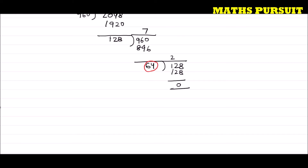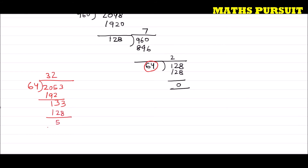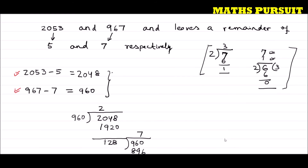We got the largest number as 64. Let us verify whether this is correct. The original number is 2053. Dividing 2053 by 64: 64 times 3 is 192 — subtracting from 205, we get 133. Then 64 times 2 is 128, and we are left with a remainder of 5. This is exactly what the question was saying — that dividing 2053 by the largest number leaves a remainder of 5.